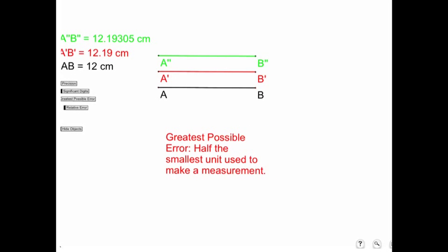From there, it leads us to yet another term. That would be the greatest possible error. And that's going to be half the smallest unit used to make a measurement.